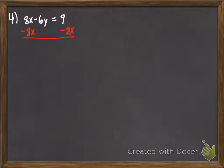So here we can again subtract off 8x. We get negative 6y equals 9 minus 8x. And then we can divide both sides by a negative 6.